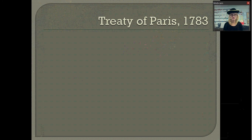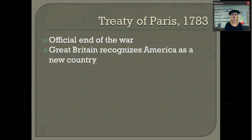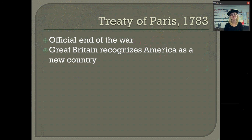Of course, the surrender at Yorktown wasn't the official end — the war had to end with a treaty. It ended with the Treaty of Paris in 1783, which is the official end of the war. Most importantly, Great Britain recognized America as a new country — essentially saying, 'We surrender and we see that you are your own country.' Great Britain was the most powerful military in the world, and they were surrendering to a colony. Nothing like this had ever happened in the world. When we call this the 'shot heard around the world,' it would go on to influence France, Ireland, Latin America, and other countries to rebel against their colonial masters. This is a really important war with really important significance.